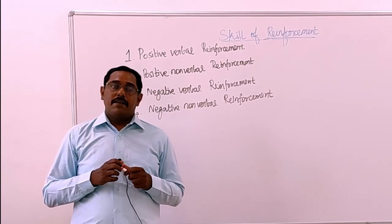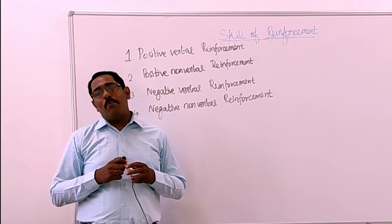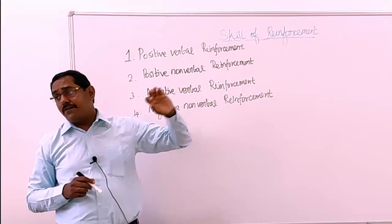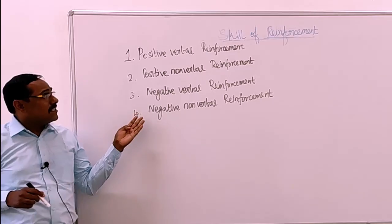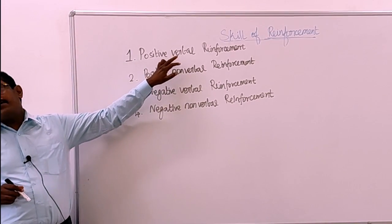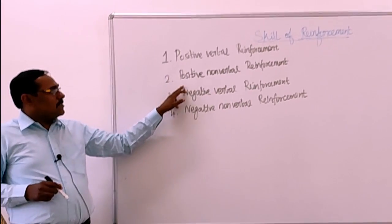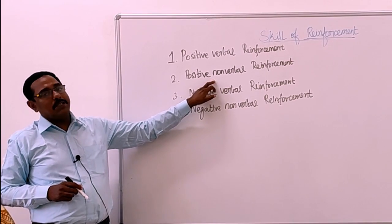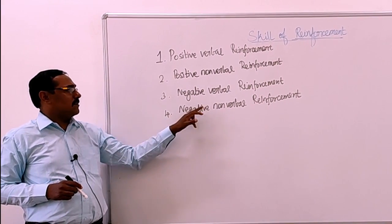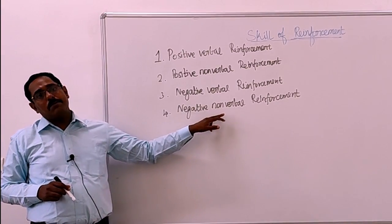Hello viewers. Now we are going into the components of the skill of reinforcement. It consists of four components: the first is positive verbal reinforcement, the second is positive non-verbal reinforcement, the third one is negative verbal reinforcement, and the fourth one is negative non-verbal reinforcement.